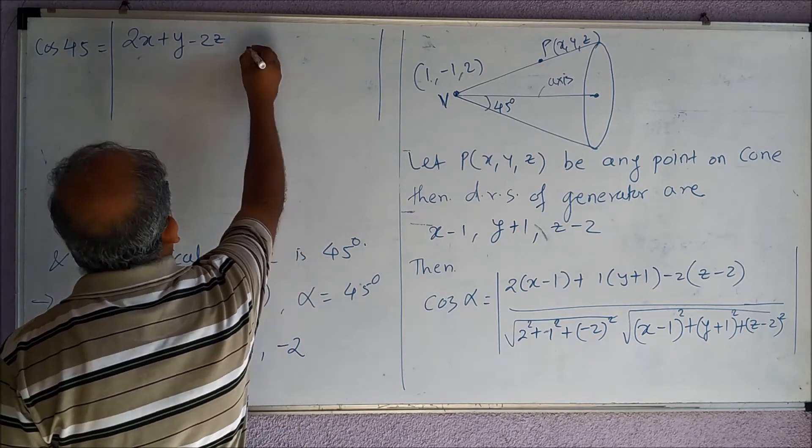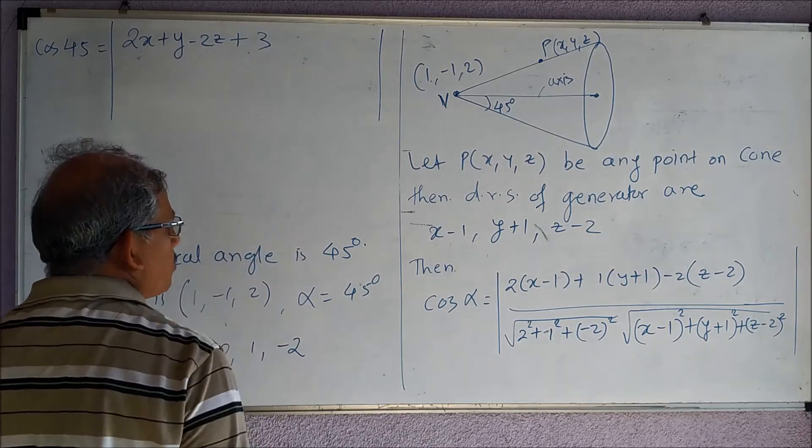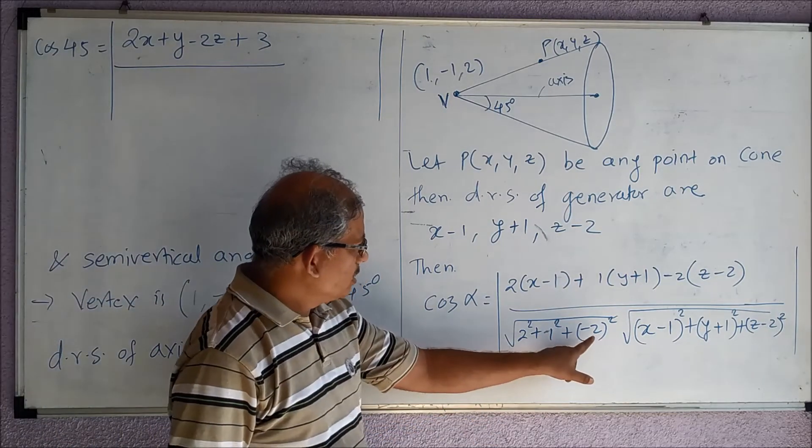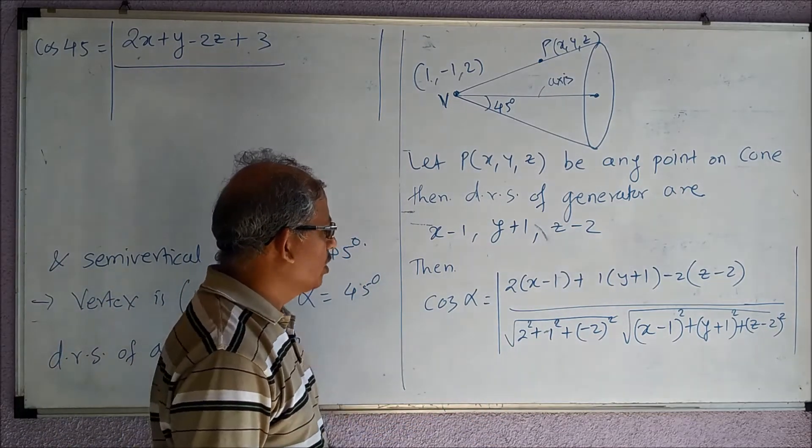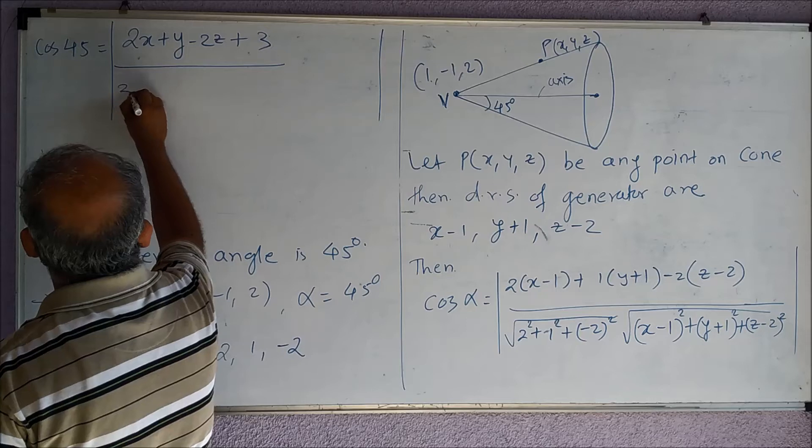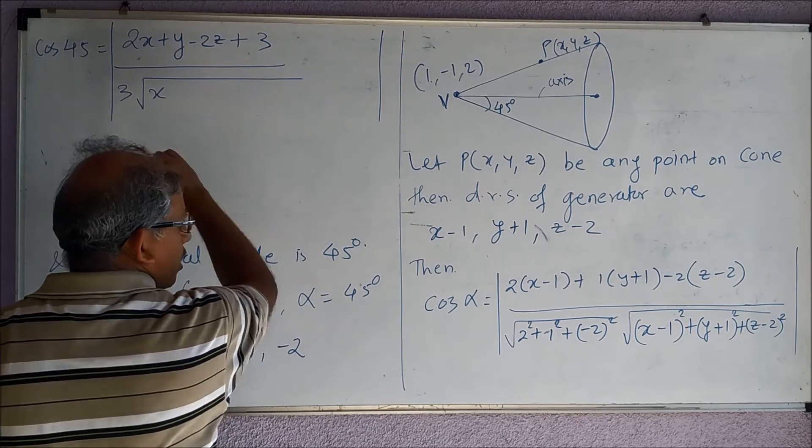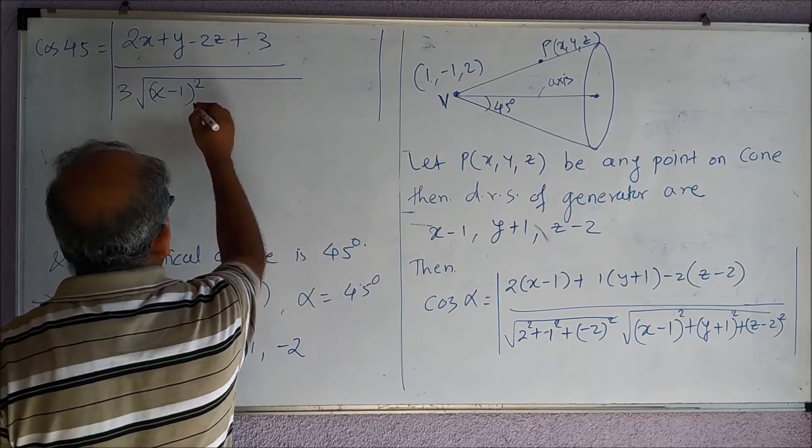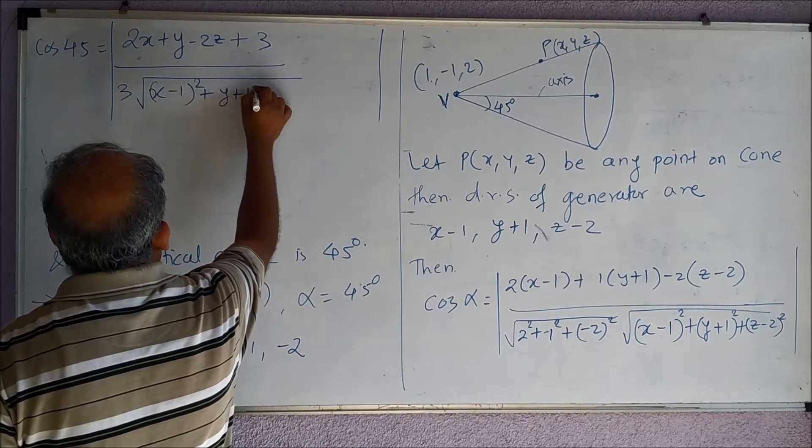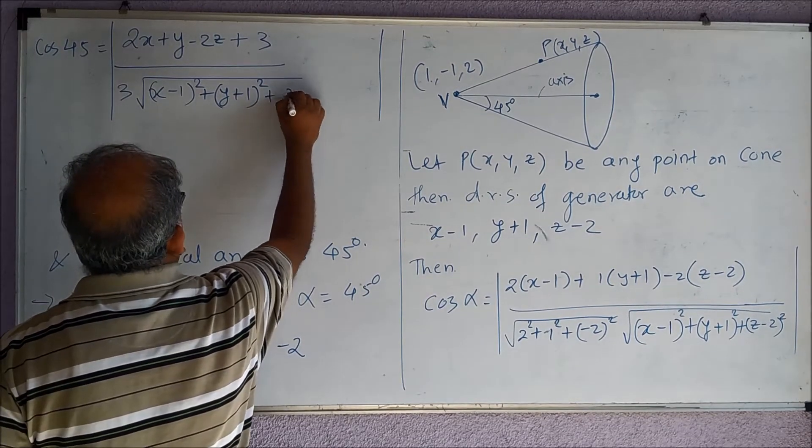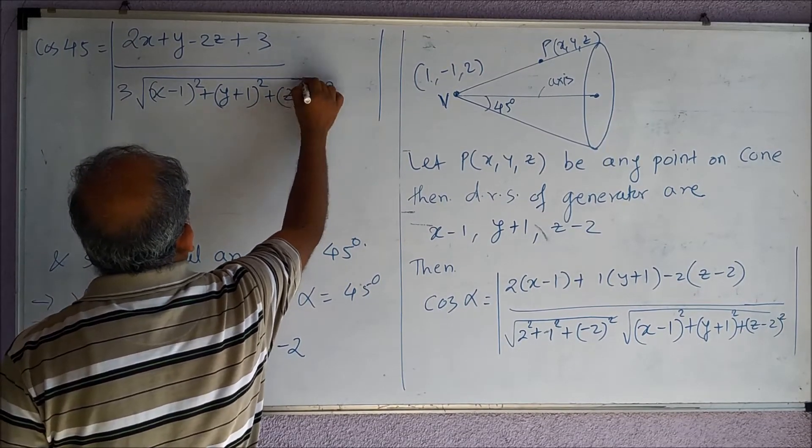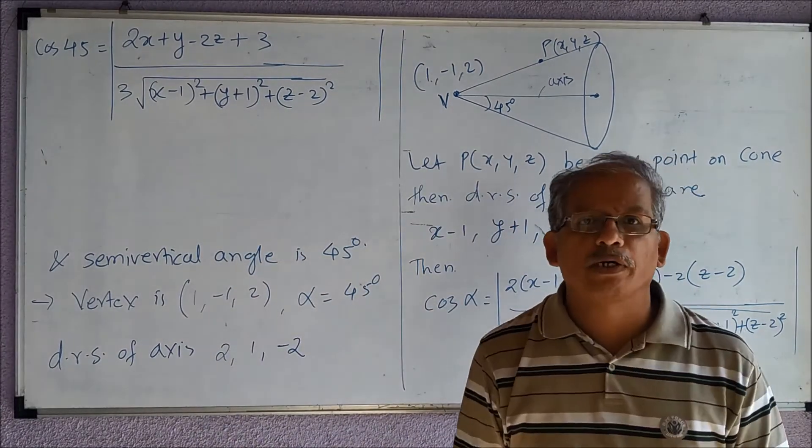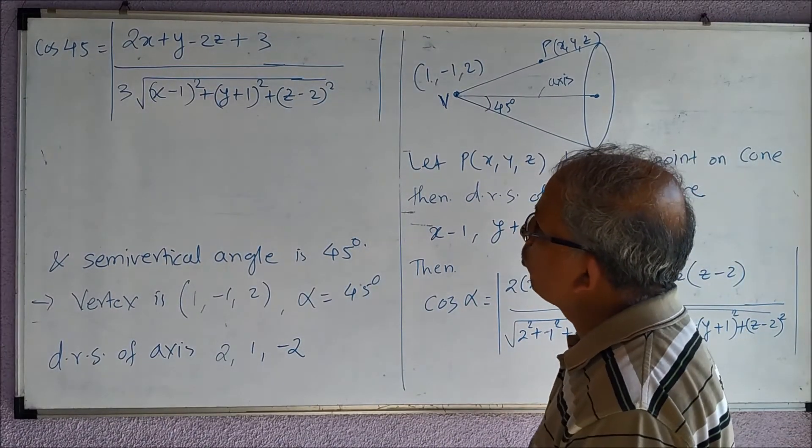This is -2 + 1 + 4, 5 - 2 is 3, divided by... this is 4 + 4, 8 + 1, so this is 3, and √((x-1)² + (y+1)² + (z-2)²).